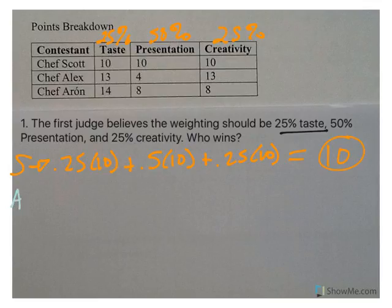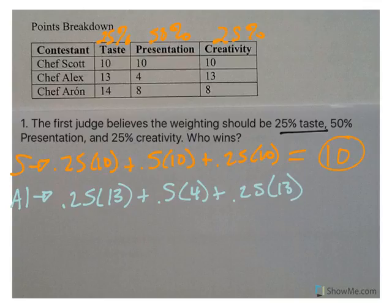Now let's go to Chef Alex. We've got 25% times 13 plus 50% times 4 plus 25% times 13, right? Because we're taking the percent times the value. And Chef Alex will end up with an 8.5 from Judge 1.